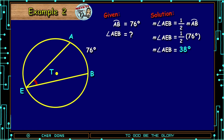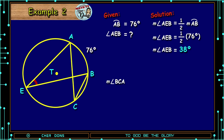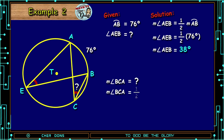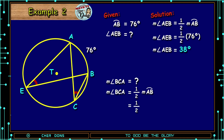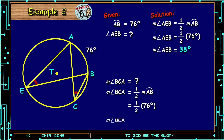What if we have another angle — Angle BCA? The measure of Angle BCA is equal to one-half the measure of its intercepted arc, arc AB. So one-half times 76 degrees is equal to 38 degrees. Therefore, the measure of Angle BCA is equal to 38 degrees.